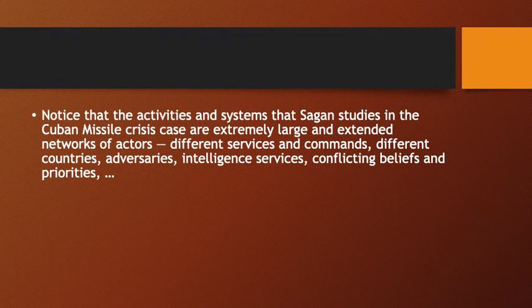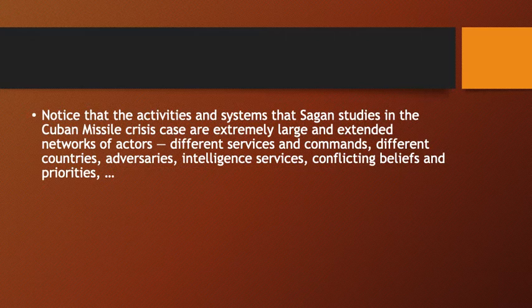The activities and systems Sagan studies in the Cuban Missile Crisis are extremely large, extended networks of actors - different military services and commands, different countries with European countries acting somewhat independently, different and uncontrollable actions by adversaries including especially the USSR, the somewhat independent actions of intelligence services, and conflicting beliefs and priorities within the organization. Sagan found evidence of all these kinds of sources of incoherence and inconsistent management which creates the possibility of devastatingly important error.